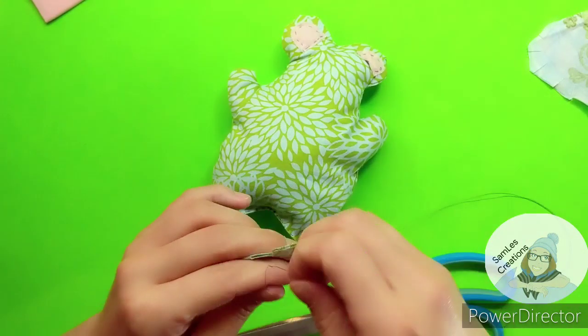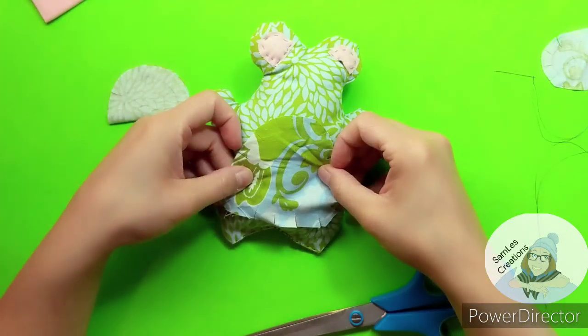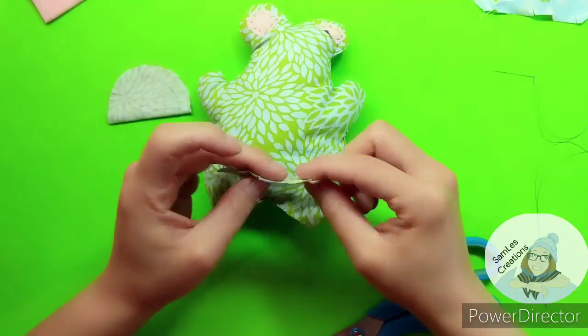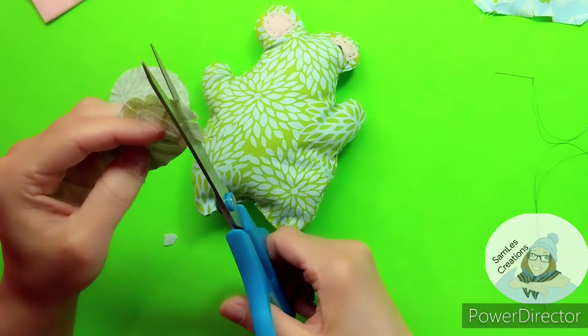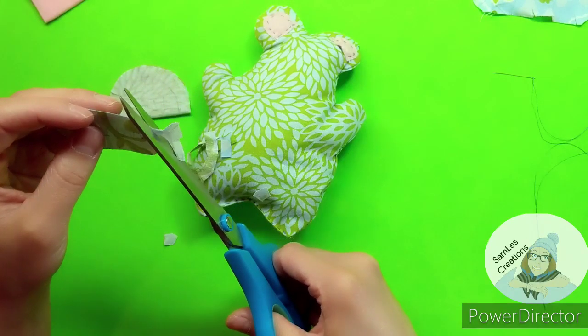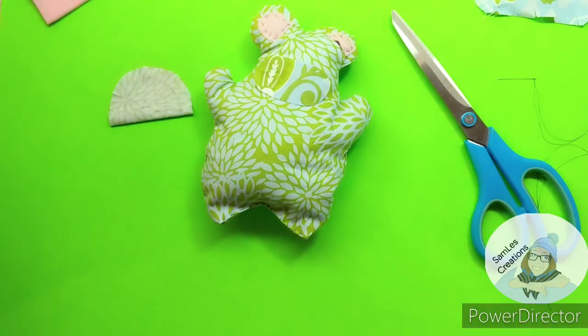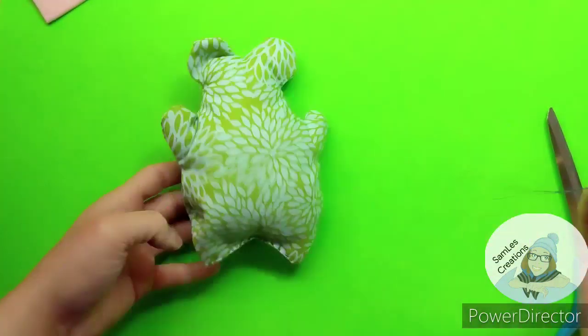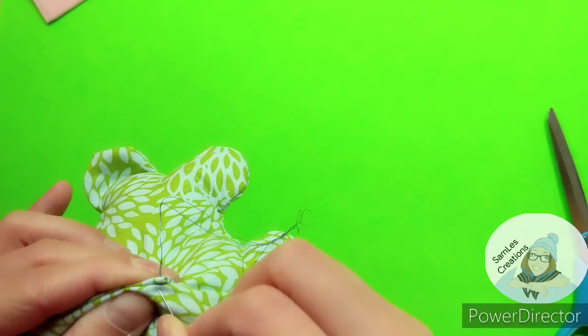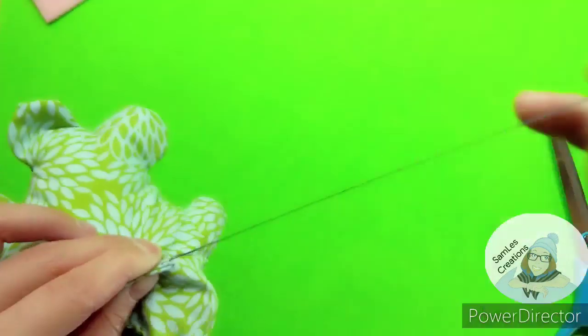So I decided against doing a belly and a mouth. This stuffed animal is a little bit too small for all these details, at least for me. So I finished the tail and then I sewed it onto the butt of the plushie using, I think it's called a satin stitch, running in the same direction.